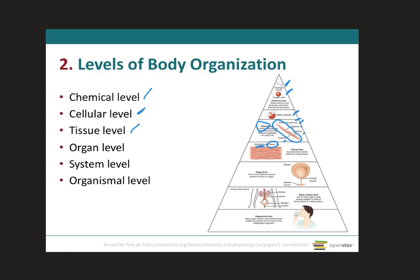Then we go to the organ level. Here we're going to have two or more different types of tissues that come together and organize to form an organ. In this case we have the urinary bladder, formed by two tissues: smooth muscle tissue and skeletal muscle tissue. These structures have specific functions and a recognizable shape. The smooth muscle allows the bladder to stretch and accumulate urine, while the skeletal muscle keeps urine in the compartment until you're ready to urinate.